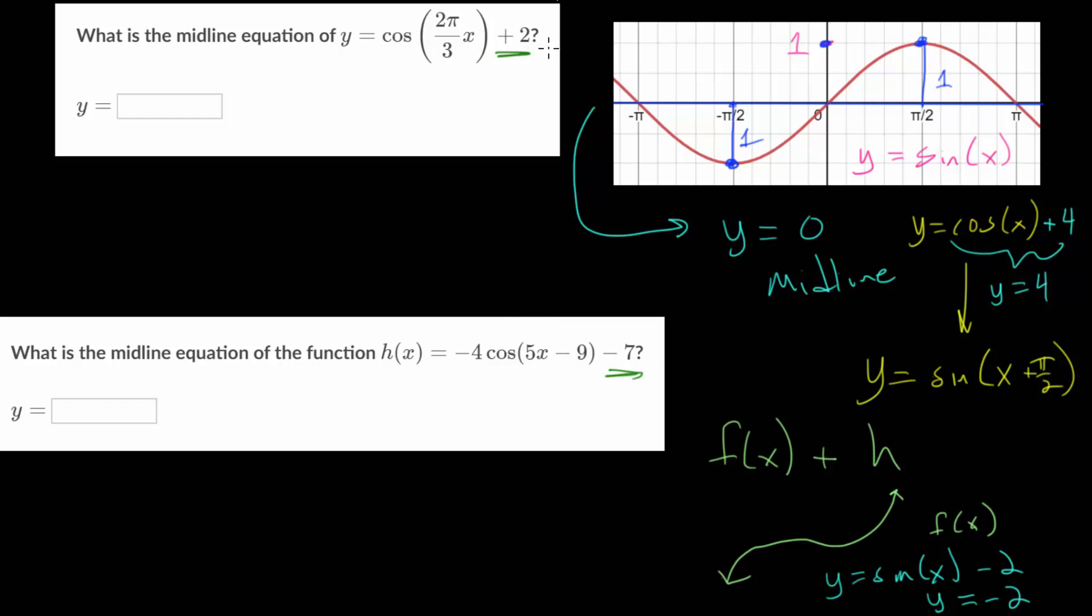if we are adding 2 on the outside, that will shift the midline or the entire function up vertically 2 units. Meaning that the midline equation for this sinusoidal function is just y equals 2.